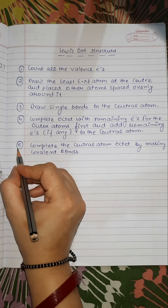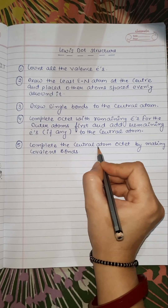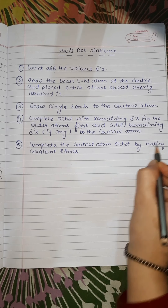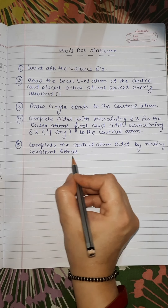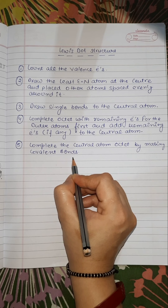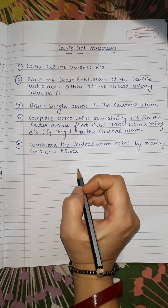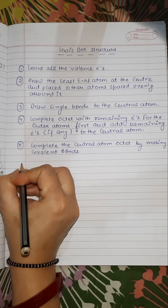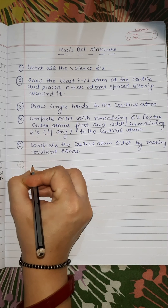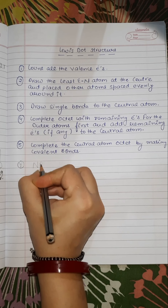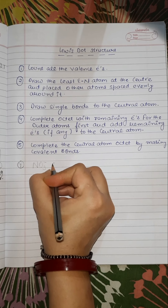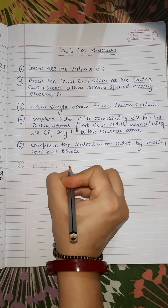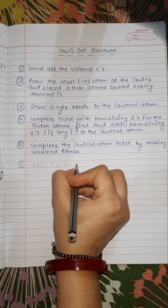Step 5: Complete the central atom octet by making covalent bonds. Now let's draw the Lewis dot structure of nitrate ion, NO₃⁻.